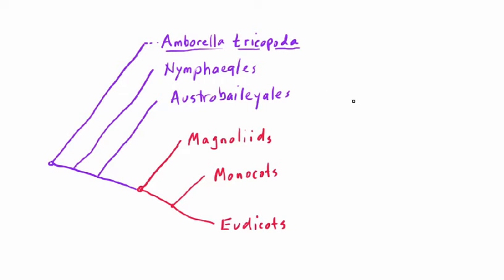If we go with the chronology presented in the earlier video, the ANA plants split away sometime before the start of the Cretaceous, and the mesangiosperm radiation away from its most recent common ancestor took place sometime in the earliest Cretaceous.